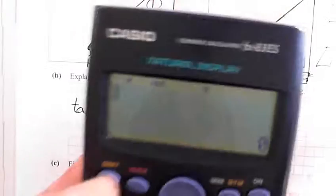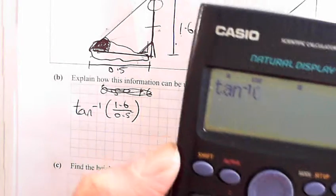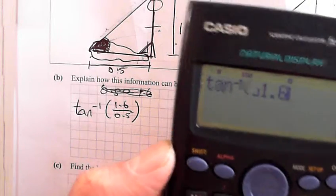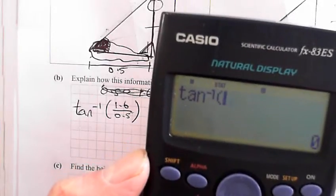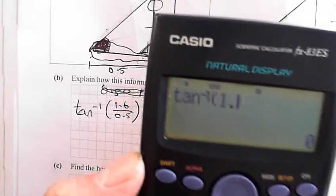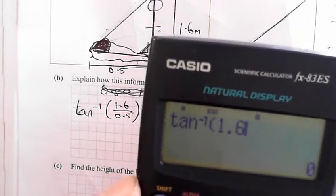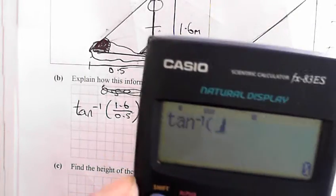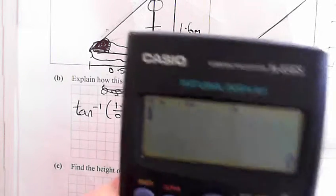So you go second function tan, hit the fraction button, 1.6. I'll do that again. So your calculator is gone like mine now. I'll do it again.